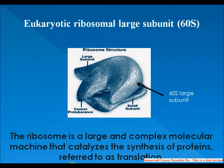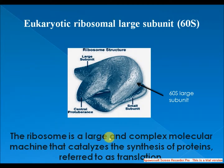The 60S subunit, which I discussed earlier as part of the 80S ribosome, is structurally and functionally related to the 50S subunit of prokaryotic 70S ribosomes. However, the 60S subunit is much larger than the prokaryotic 50S subunit and contains many additional protein segments as well as ribosomal RNA expansion segments.